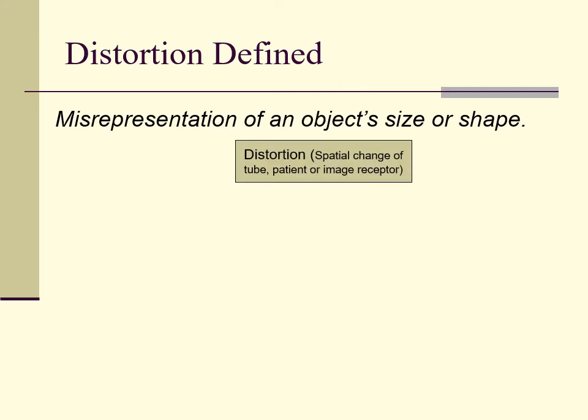Distortion can only be altered if there's some change in the spatial configuration of the tube, image receptor, or patient. One of these three things must be moved or be angled for changes in distortion to occur.